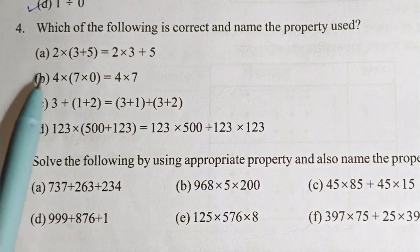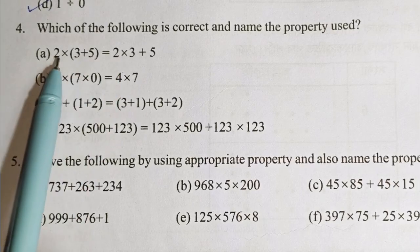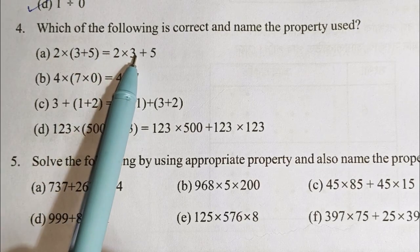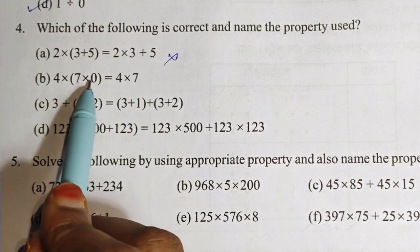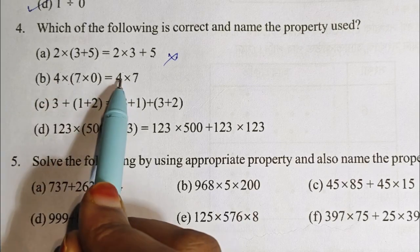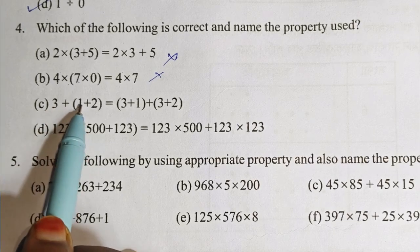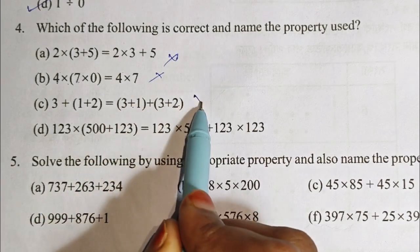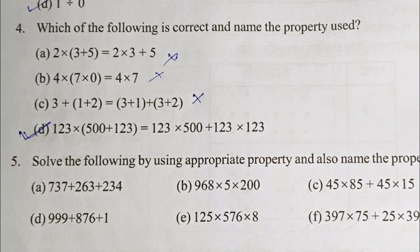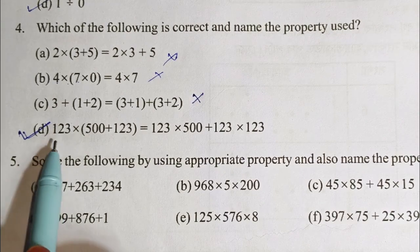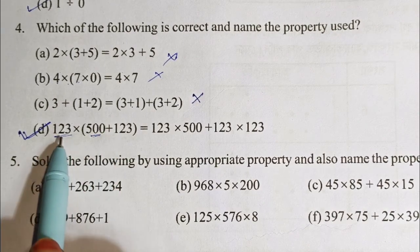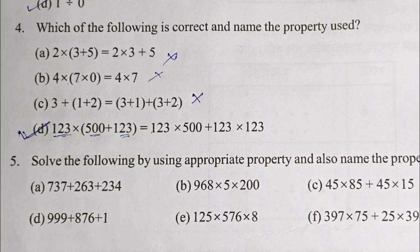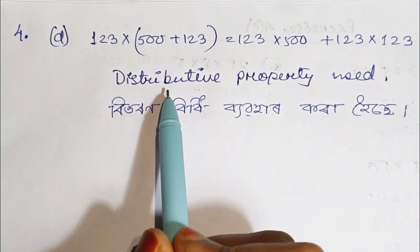For question 4: it says 2 into 5 plus 8. We check 2 × 3 plus 5 — this is not correct. We check with 3, 100, and 11 — this is not correct. We check 7 and 8 — this is not correct either. The correct answer uses the distributive property.